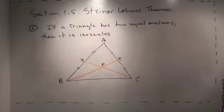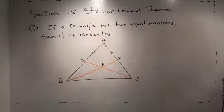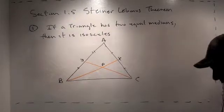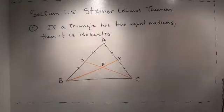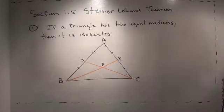Good evening. Welcome to Geometry Project Number 5, which is about Section 1.5 in Geometry Revisited. This section is entitled the Steiner-Lemmas Theorem. This section is a tremendous example of how beautiful math can be, and how sometimes very simple questions — or questions that seem very simple in math — can have incredibly complex answers.